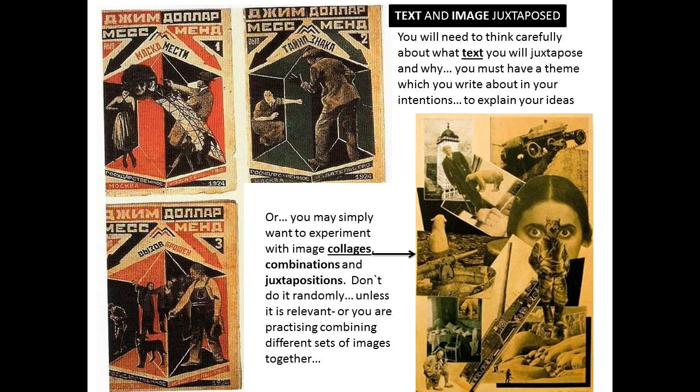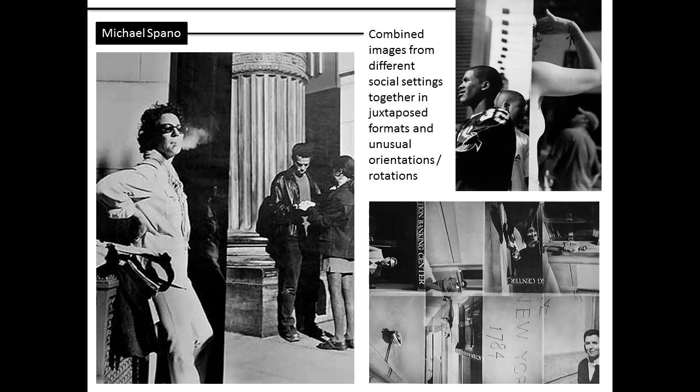Michael Spano is predominantly a social and documentary photographer of general urban landscapes, but it was the way that he combined images together that made his work so interesting.